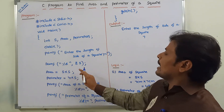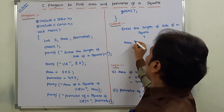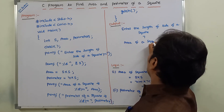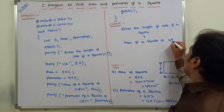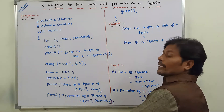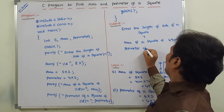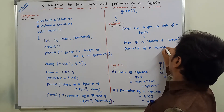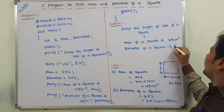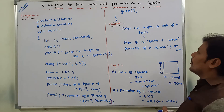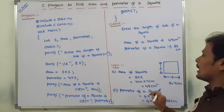Once we calculate the area and perimeter, both values are printed. Area of a square is 7 into 7, that is 49 cm². Perimeter of a square is 4 into s, where s is 7 cm, so 4 into 7 equals 28 cm. This is the output of the given program — the program and its logic.